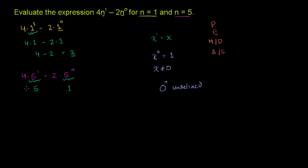So this expression becomes 4 times 5 minus 2 times 1, or 4 times 5 is 20 minus 2 times 1, that is 2. And this is equal to 18. And we're done.